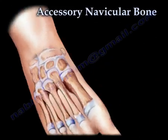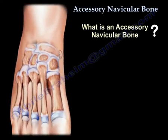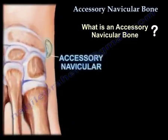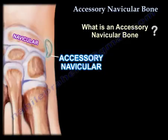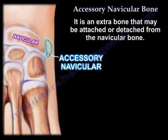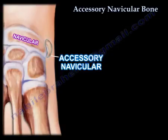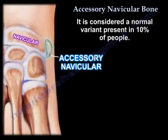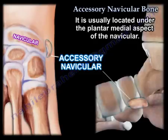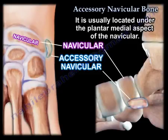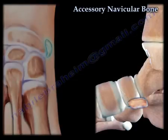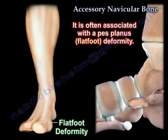Accessory Navicular Bone. An accessory navicular bone is an extra bone that may be attached or detached from the navicular bone. It is considered a normal variant present in up to 10% of people. This accessory bone is usually located under the plantar medial aspect of the navicular and is often associated with a pes planus deformity.